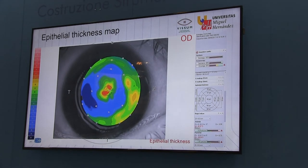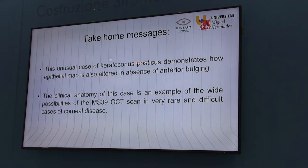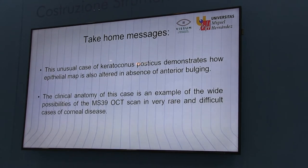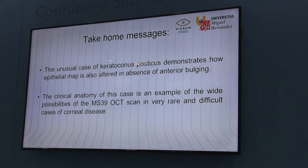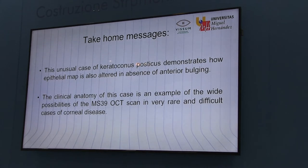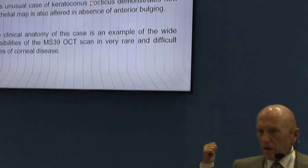This epithelial thickness map, and this unusual case of keratoconus posticus, demonstrates how the epithelial map is also altered in the absence of anterior bulging. The clinical anatomy in this case is an example of the wide possibilities of MS-39. You cannot implant an intraocular lens without an OCT image — in my opinion it is malpractice — and you can miss the diagnosis of keratoconus posticus with slit-lamp observation alone.